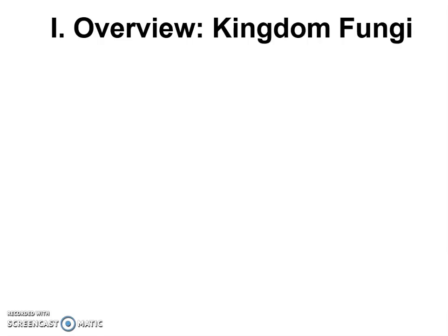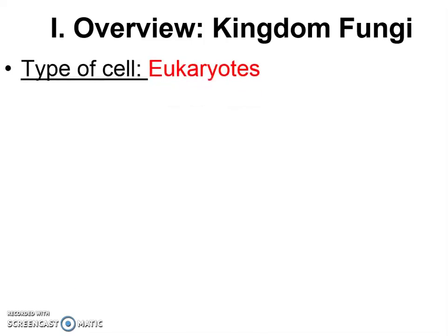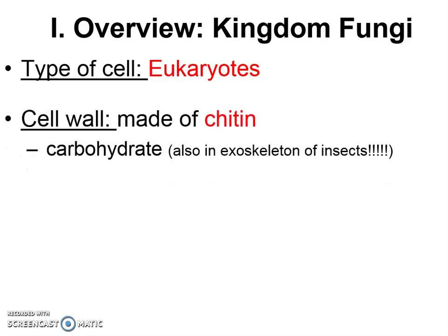So what is kingdom fungi? Let's make sure we're not getting it confused with plants. Fungi are all eukaryotes, meaning they all have a nucleus, which also means that pretty much they are all multicellular. Additionally, they have a cell wall, which also sounds a lot like a plant, but this cell wall is actually going to have a different material. We'll learn about the plant cell wall in future notes. This one is called chitin — chitin is a carbohydrate, meaning a sugar-like molecule, and it is also found in the exoskeleton of insects.